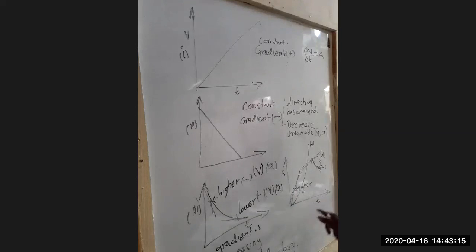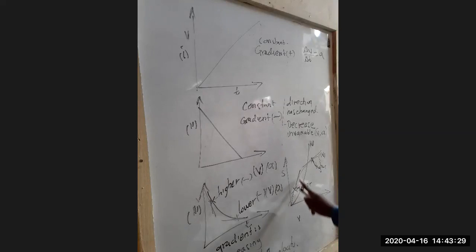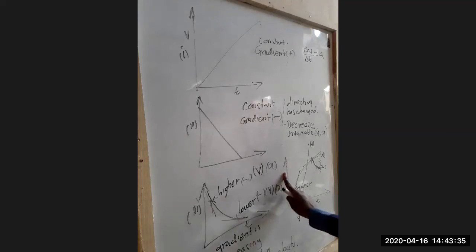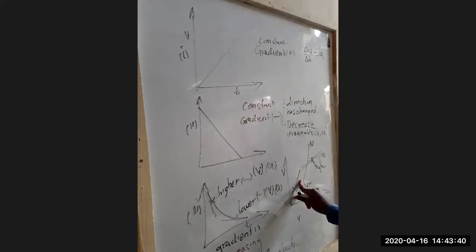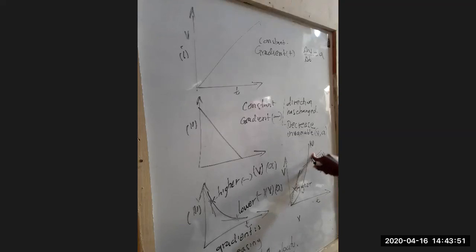The velocity is high when the body started, then it reduced. So we describe the motion as: the body moves with a decreasing velocity. If the same graph was on a velocity-time graph, then the gradient represents acceleration — the acceleration at the first point is higher than at the second point — so therefore the body is moving with a decreasing acceleration.